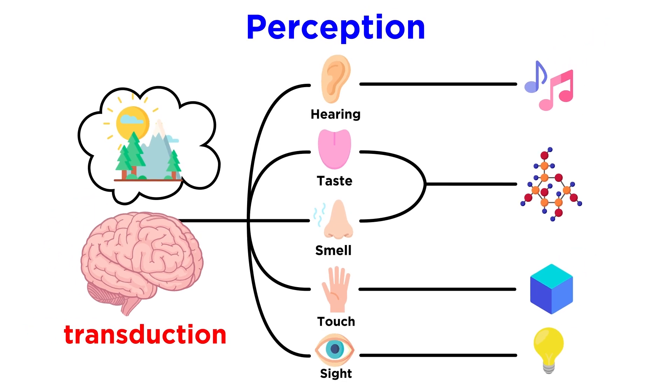Perception, then, is just the brain putting sensory information together to represent the external world. It's these mental representations that we use to go through our daily life.